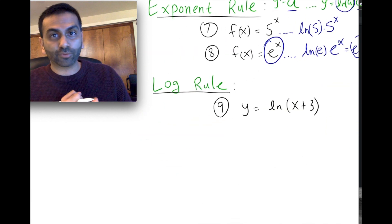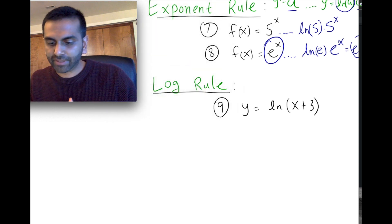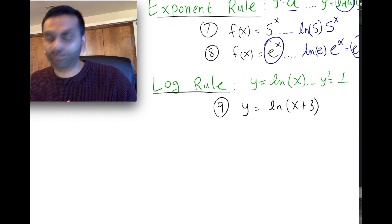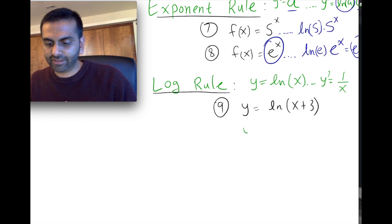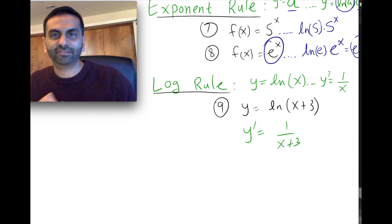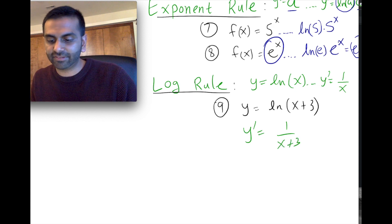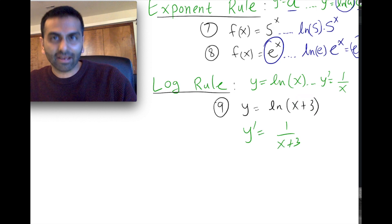Finally, there's the logarithm rule. If your function is the natural log of something, then the derivative is just 1 over the thing that was inside. So if y = ln(x), the derivative is 1/x. If it was ln(x + 3), the derivative is 1 over (x + 3). There are other rules involved — including the chain rule if the inside is more complicated — and the product and quotient rules, all of which will be covered in the next few videos.